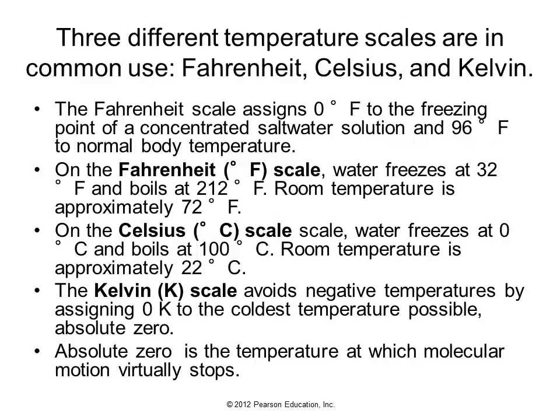We measure temperature on three different scales: the Fahrenheit scale, the Celsius scale, and the Kelvin scale. The Fahrenheit scale is commonly used in English-speaking countries. On the Fahrenheit scale, water freezes at 32 degrees, so if the temperature is going to be 32°F, we might encounter ice on the roadways. On the Celsius scale, water freezes at 0 and boils at 100. The Kelvin scale avoids negative temperatures by assigning zero Kelvin to the coldest temperature possible, called absolute zero.